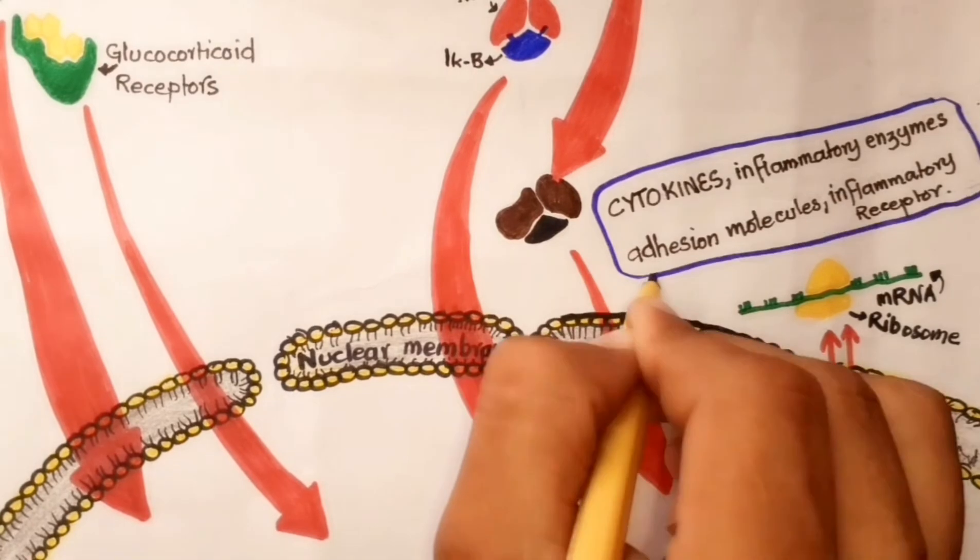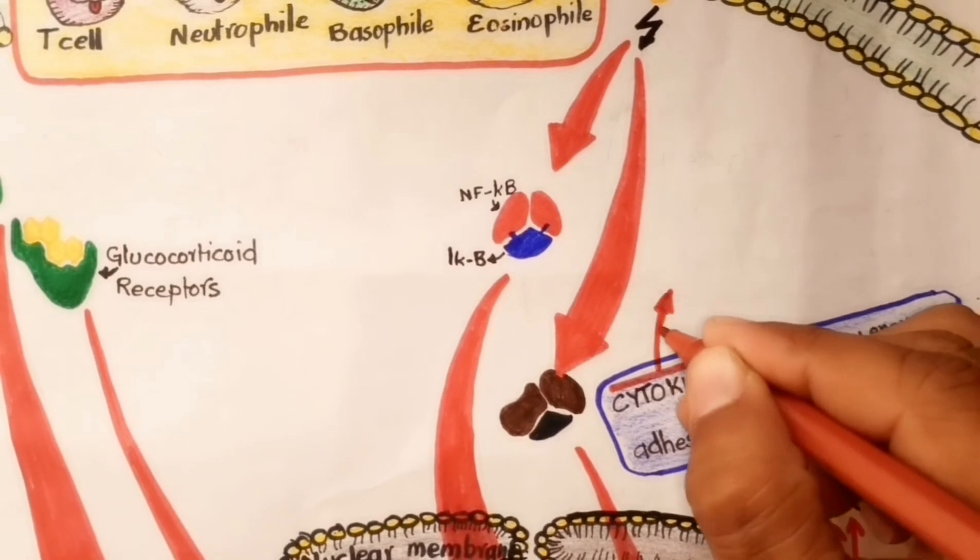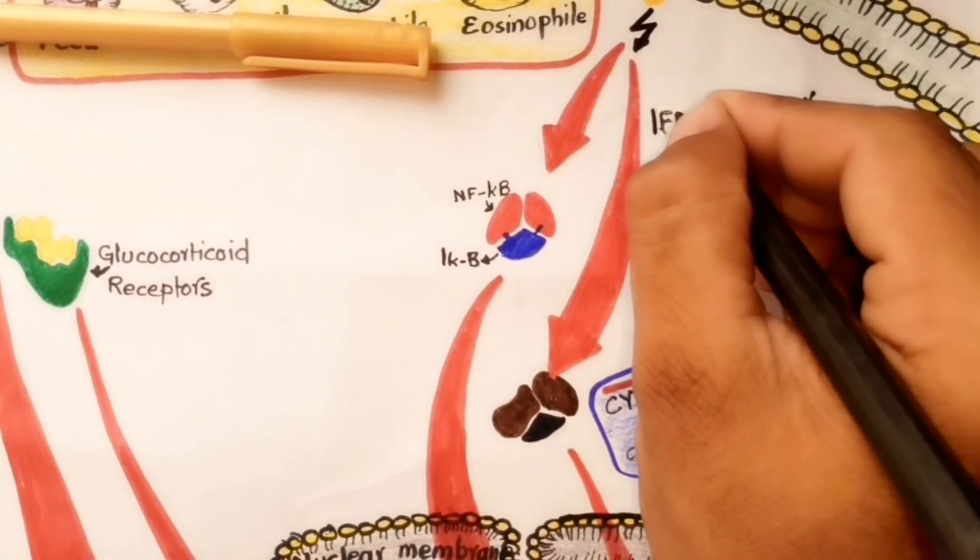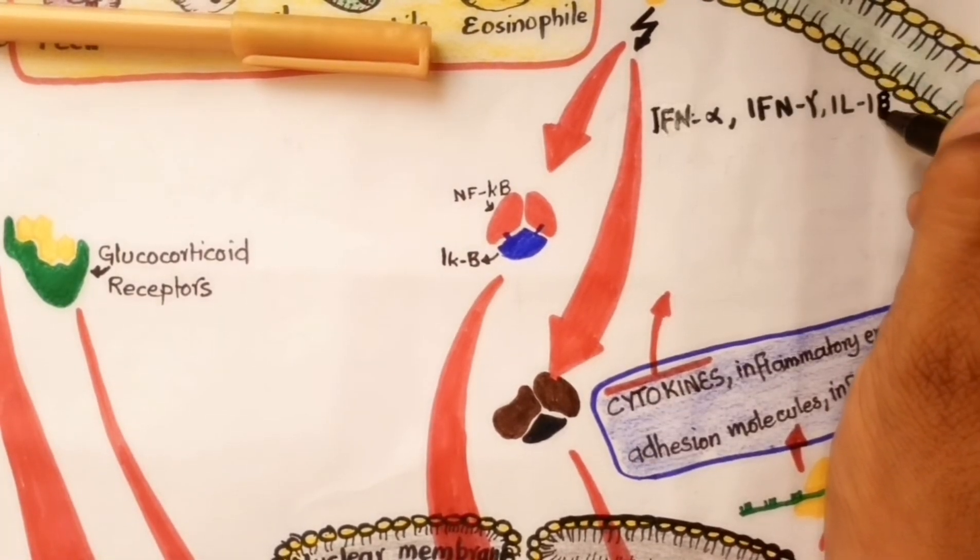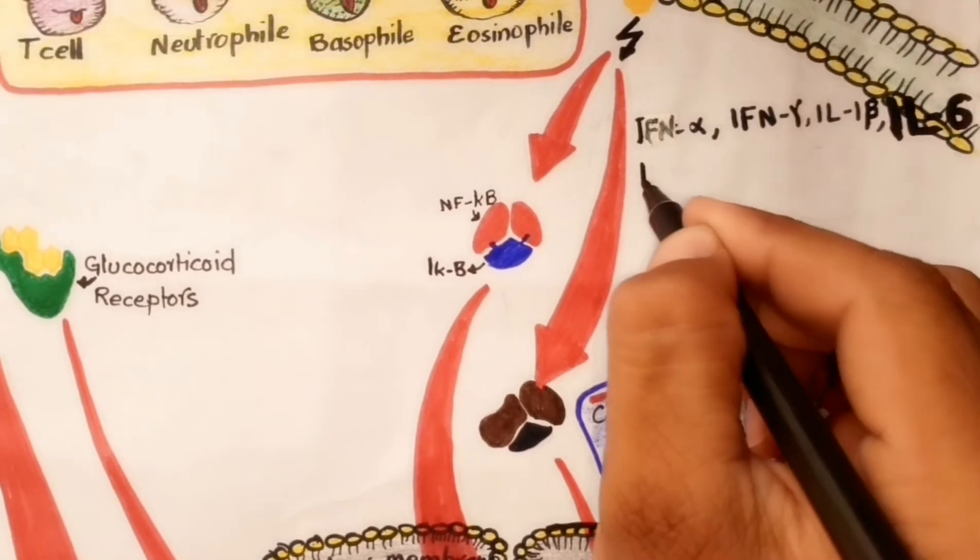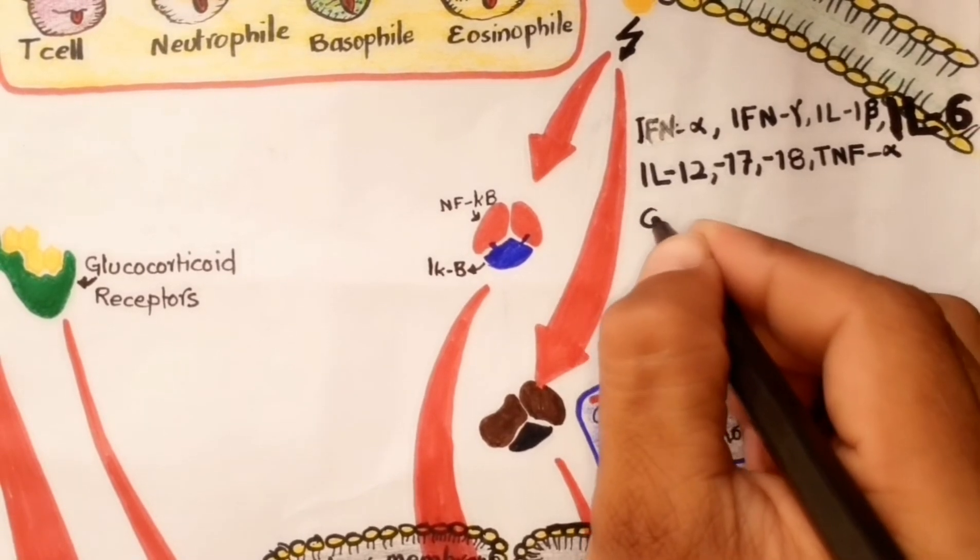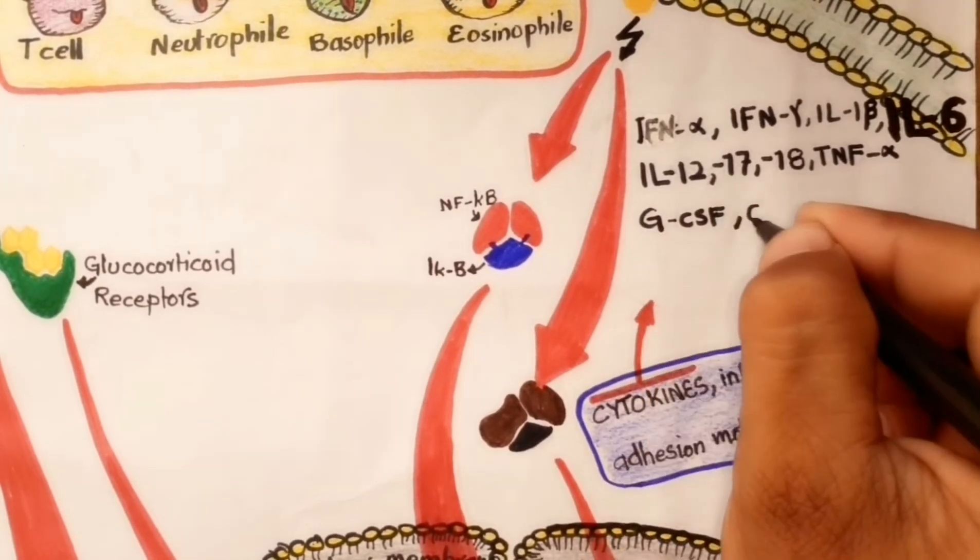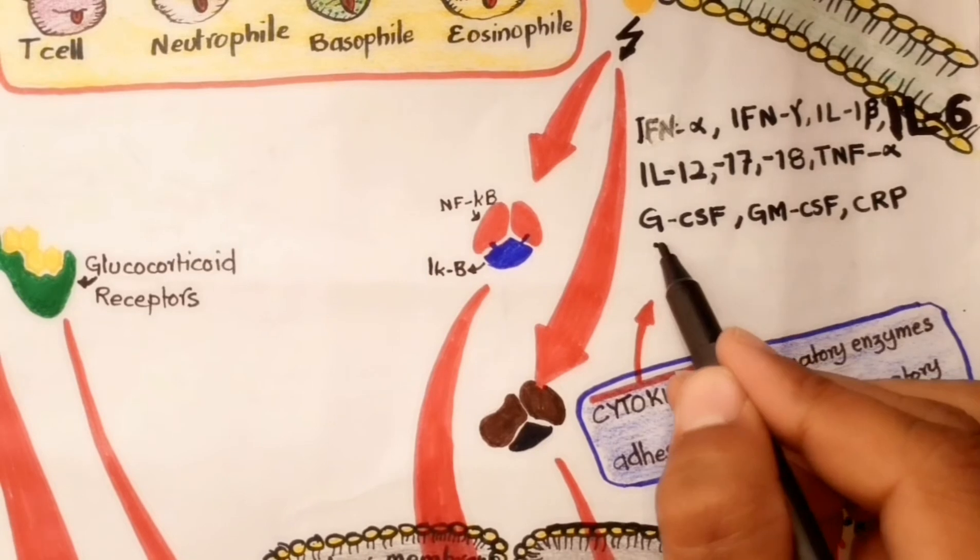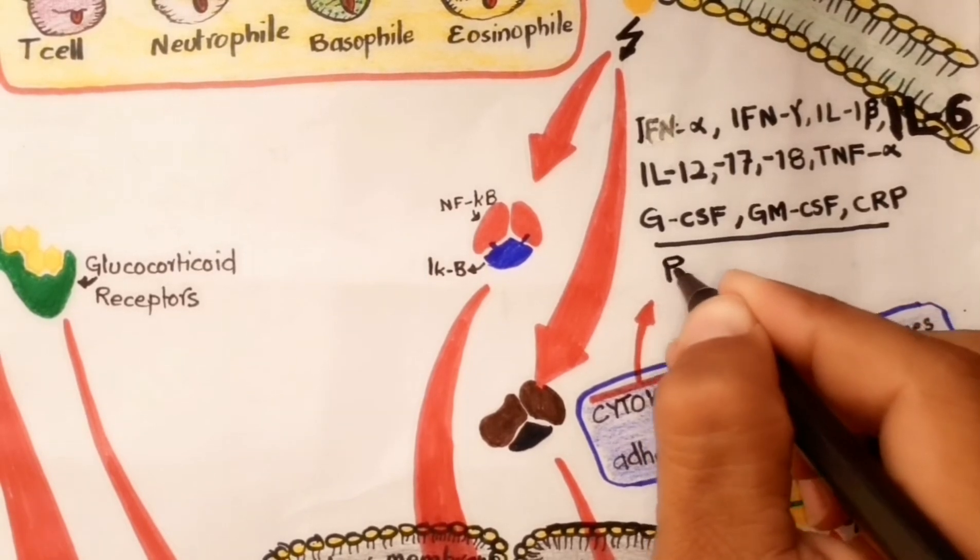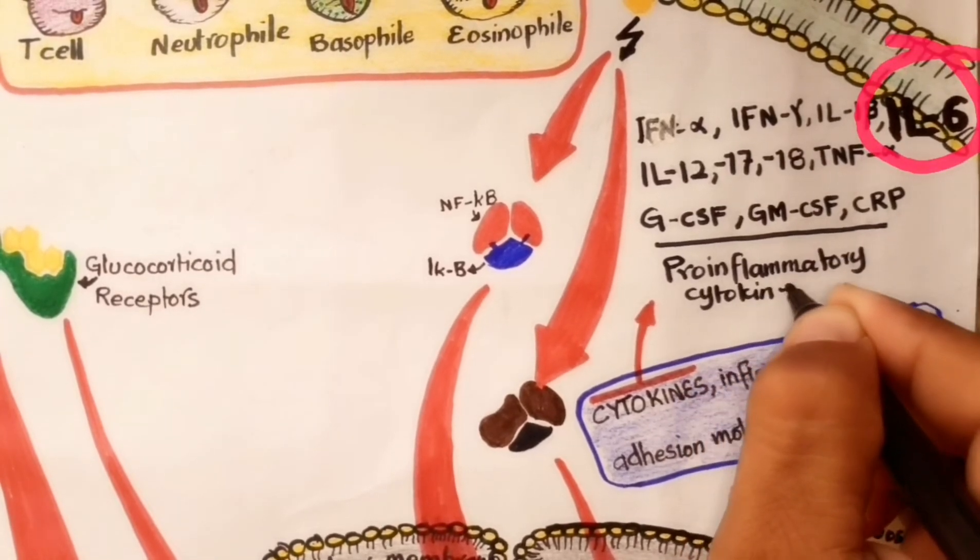Among these cytokines, specifically pro-inflammatory cytokines are the key players in COVID-19. Pro-inflammatory cytokines include interferon alpha, interferon gamma, interleukin-1 beta, interleukin-6, interleukin-12, interleukin-17, interleukin-18, tumor necrosis factor alpha, granulocyte colony-stimulating factor, granulocyte-macrophage colony-stimulating factor, and C-reactive protein. Among them, interleukin-6 is more important as it is the key protein in coronavirus-induced cytokine storm.